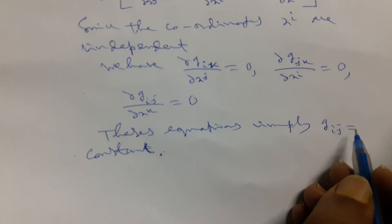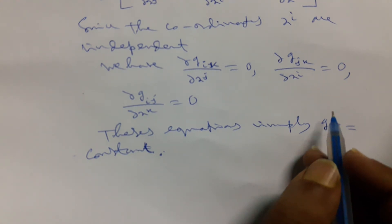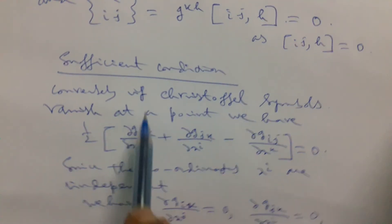So now we prove all Gij is constant. This is the sufficient condition part and we also proved the necessary condition.